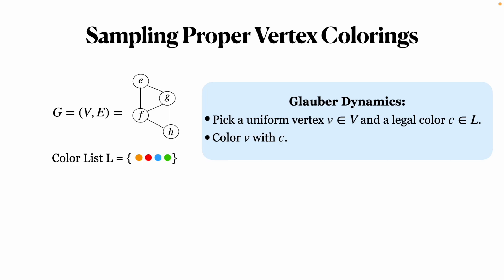We usually employ a Markov-Chain-Monte-Carlo algorithm to sample from a given distribution. Specifically, we use Glauber dynamics to sample from all proper vertex colorings uniformly.